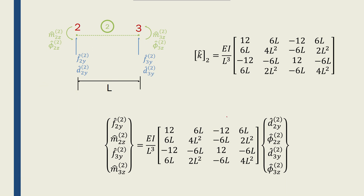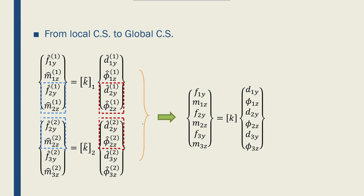Next I have element 2, which is very similar to element 1. The forces and displacements are now defined for nodes 2 and 3 at element 2. The goal is to move from the local coordinate system to the global coordinate system, using the stiffness matrices of element 1 and element 2 to relate local nodal forces to local nodal displacements for each element.